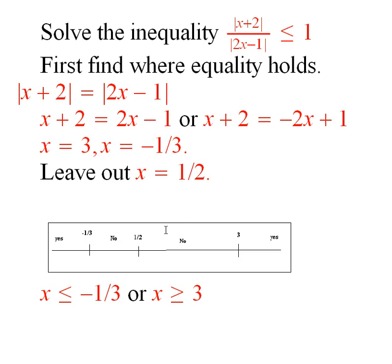So you need to get rid of that case. What happens is, these special points where equality occurs, or where this is not even defined, divide the real line into disjoint intervals.